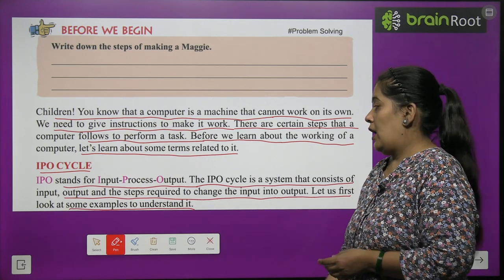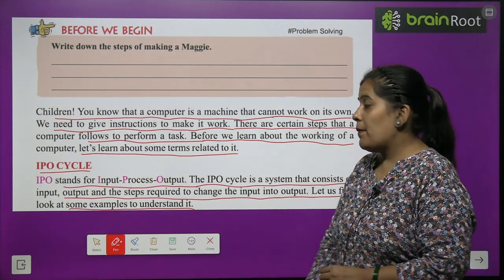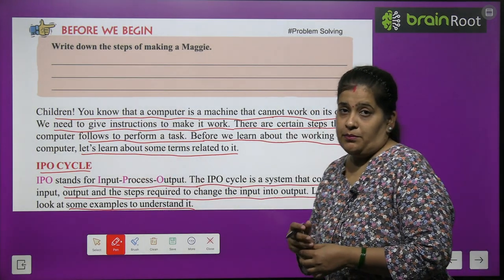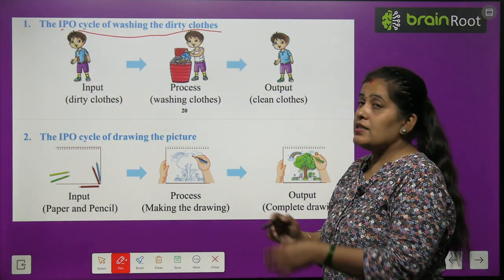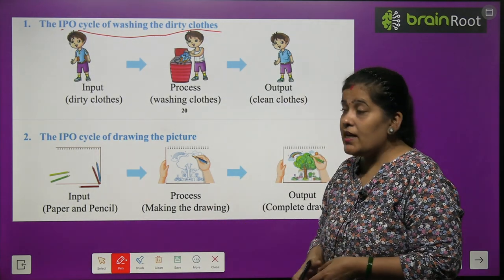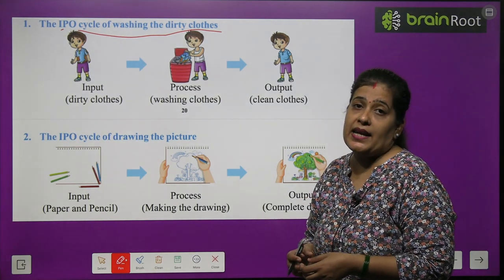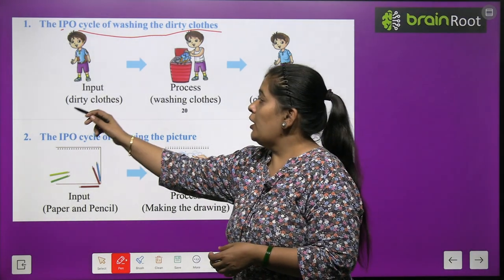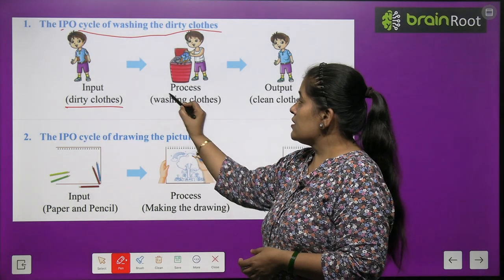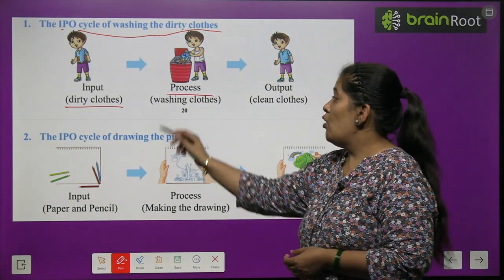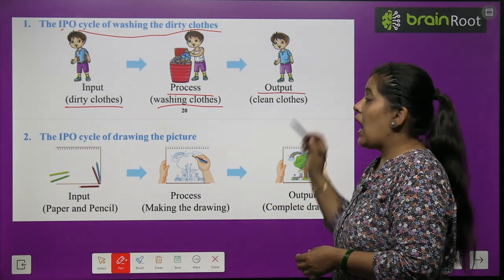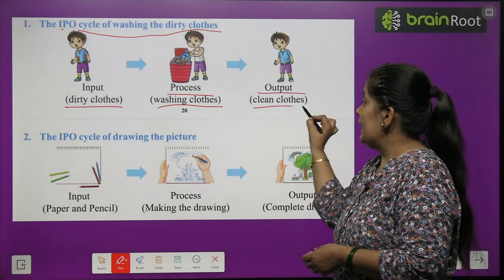IPO cycle of washing the dirty clothes. After the process, we get output. Output — what do we get? Clean clothes.